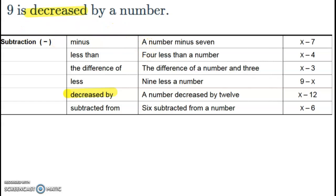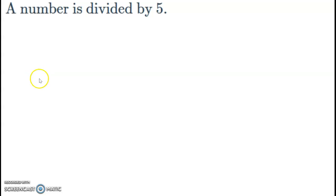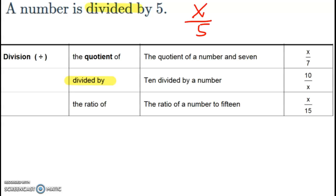Let's look at another example. A number is divided by 5. You're going to take a number, which is x, and divide it by 5. Divided by—ten divided by a number is what you have here. But instead of the 10 being divided by, it's a number divided by 5, so we got the x in the numerator and the 5 in the denominator.